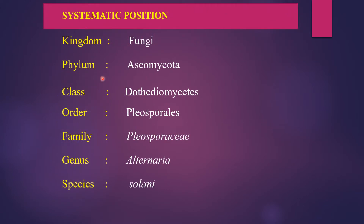Coming to the systematic position of early blight: Kingdom - Fungi; Phylum - Ascomycota; Class - Dothideomycetes; Order - Pleosporales; Family - Pleosporaceae; Genus - Alternaria; Species - solani.